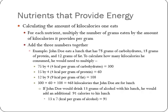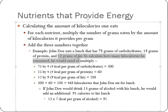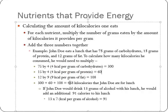Let's look at some examples of calculating the amount of calories one eats. For each nutrient, multiply the number of grams by the amount of kilocalories per gram — remember fats are 9, proteins and carbohydrates are 4 each. John Doe eats a lunch with 75 grams of carbohydrates, 15 grams of protein, and 12 grams of fat. Take 75 times 4 equals 300; 15 times 4 equals 60; 12 times 9 equals 108. Add all three and you get 468 kilocalories for John Doe's lunch.